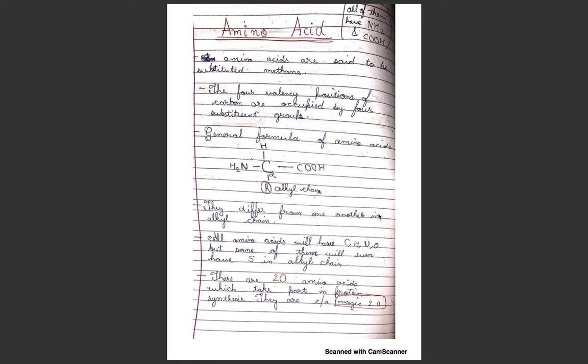Amino acids are said to be substituted methane because carbon has four valence spaces. Instead of four hydrogens in methane, there are four predefined structures attached to it. The four valency positions of carbon are occupied by four substituent groups: NH2, COOH, H, and R.